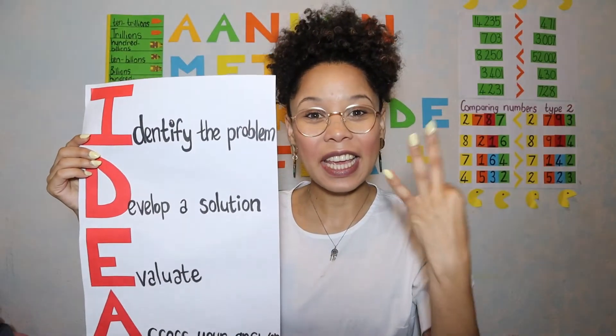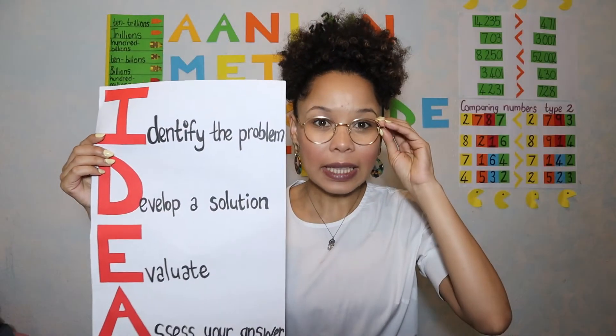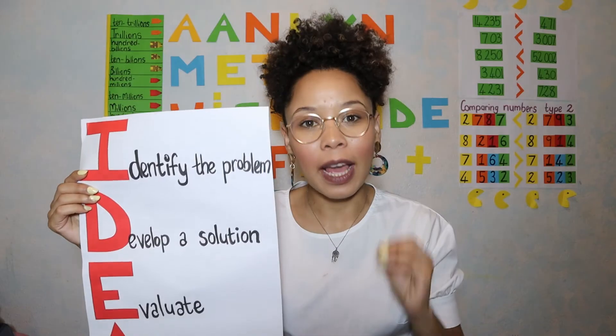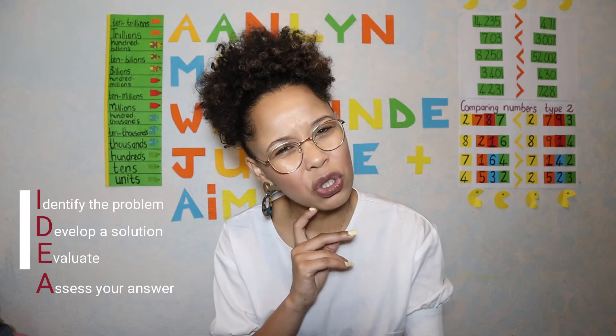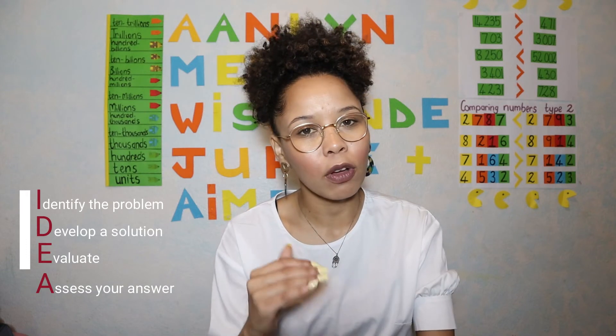Step three: evaluate. In step two you already developed a solution and came up with your number sentence. So when we evaluate, we actually do the sum. It's very important that you show each and every step. You go back to the first step where you identified the problem — what was it about? When you assess, you ask yourself: did I answer the question? Are my answers and calculations correct? You double check your answers. And that's it.